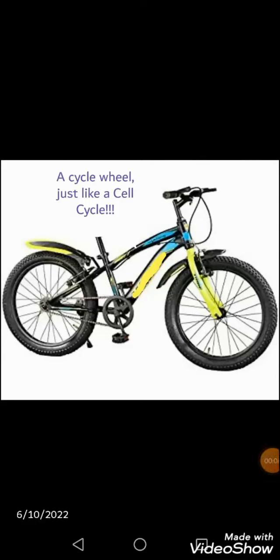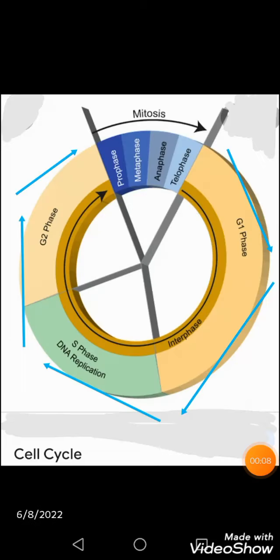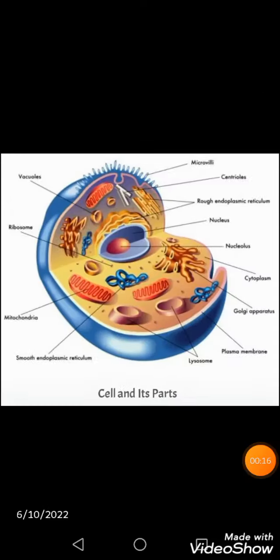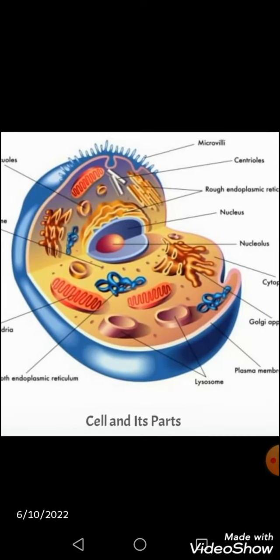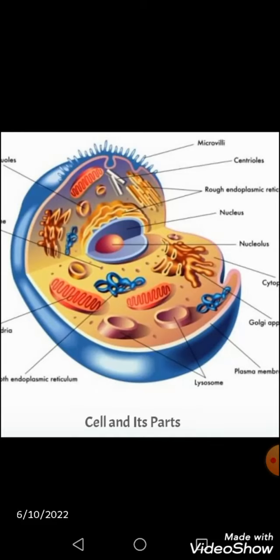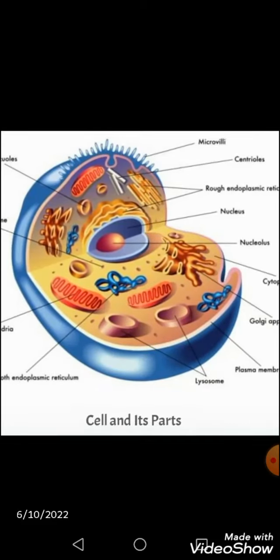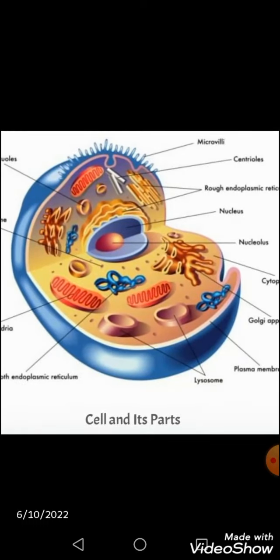This is a cycle showing its wheel that resembles your cell cycle. Your body cell, which is the structural and functional unit, has to undergo various renewal processes called the cell cycle, because it has to maintain the cell population. This sequence of events is called the cell cycle.